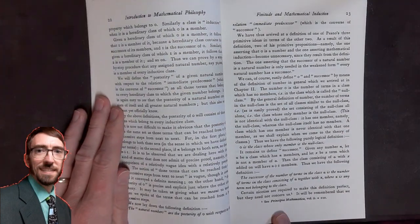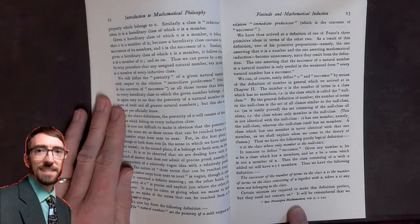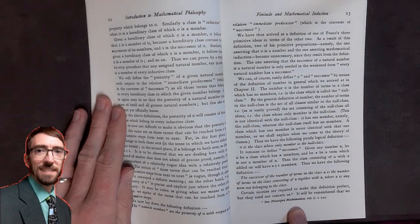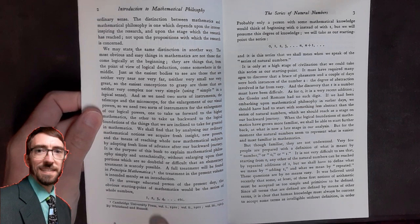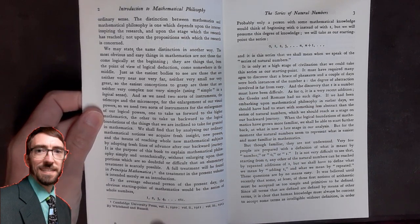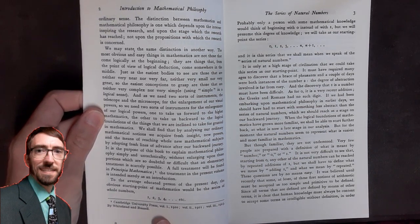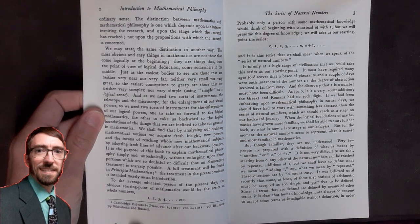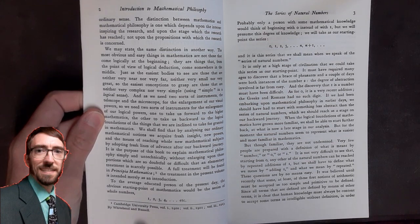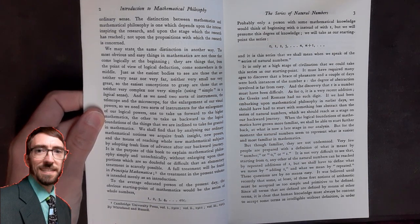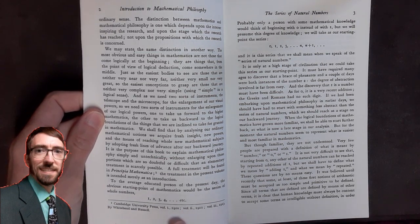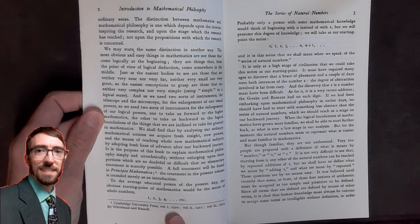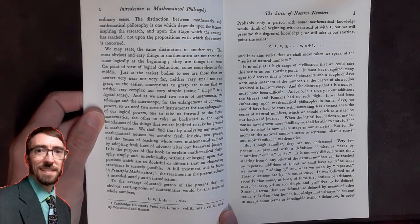One thing that is commonly referenced is Principia Mathematica. The Principia Mathematica that is referenced in here was the book that was co-authored with Russell by Whitehead and it was published by the Cambridge University Press. There are three volumes listed, published in 1910, 1911, and 1913.